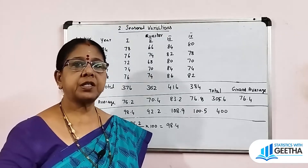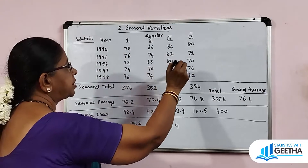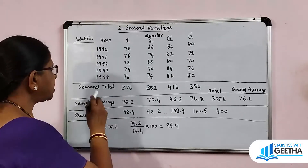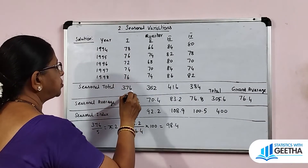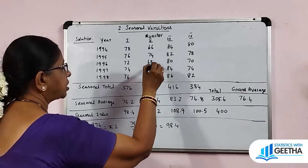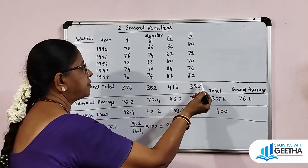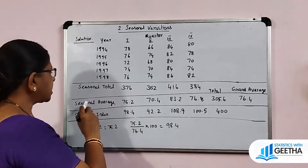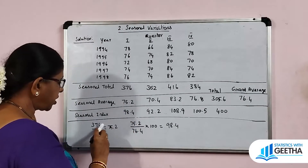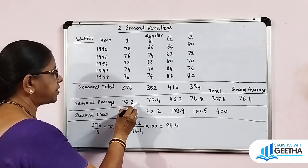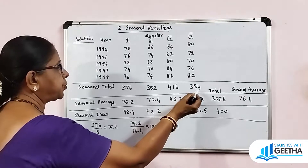For the solution using the simple average method, we prepare a table for the year and quarterly data. First, we find the seasonal total. For the first quarter, the sum of 5 values is 376. For the second quarter, the sum of 5 values is 352. Third quarter gives 416, and the fourth quarter gives 384. Next, we find the seasonal average by dividing each seasonal total by the number of years.